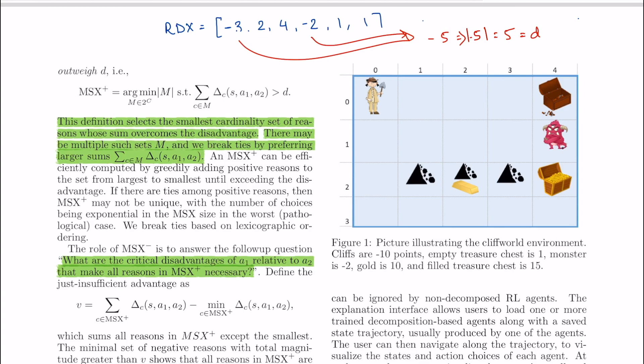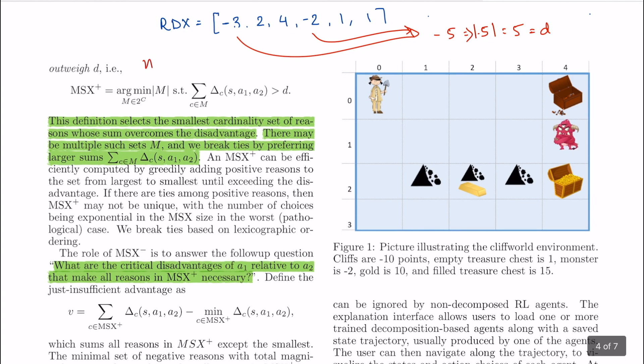In this example therefore MSX plus would consist of, well it can be anything as long as it sums greater than D. Now there are some rules that the authors have pointed out: we choose the smallest size set and if there is a competition then we'll choose the one which is lexicographically ordered.